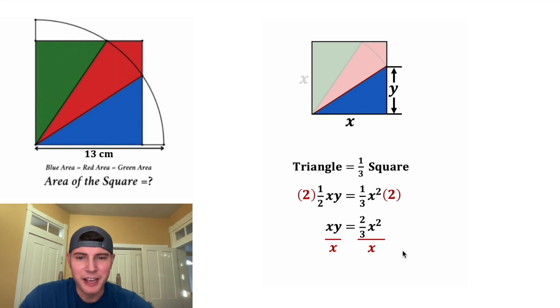Next, we can divide both sides by x, and we can do that because we know x is not equal to zero. On the left-hand side, we have y, and on the right-hand side, we have two-thirds of x. So let's change this y up here to two-thirds x.